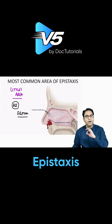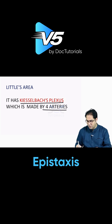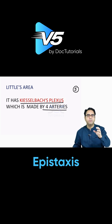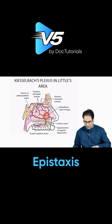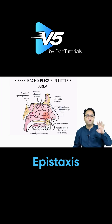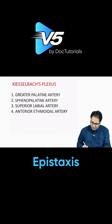What does Little's area contain that bleeds so much? Little's area has the Kiesselbach plexus, made by four arteries. We have a total of five arteries supplying the nose, but the Kiesselbach plexus is made by four of them. The famous area is Little's area and the famous plexus in that area is the Kiesselbach plexus, made by four arteries.